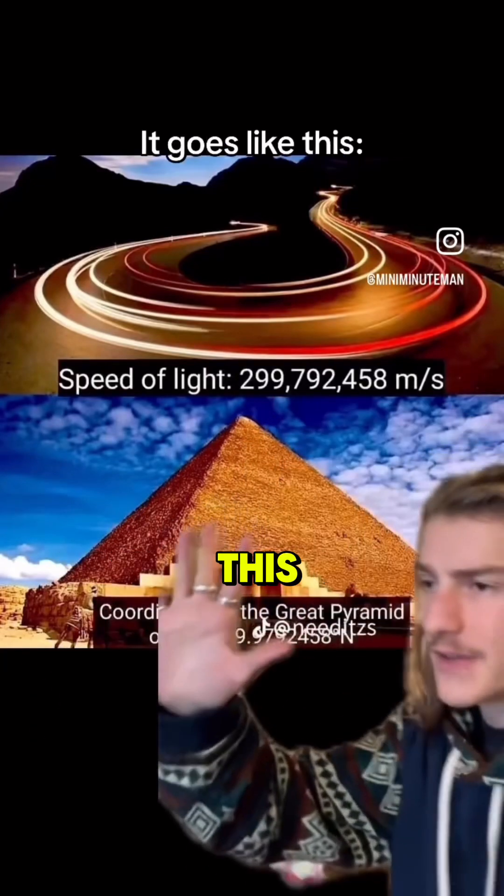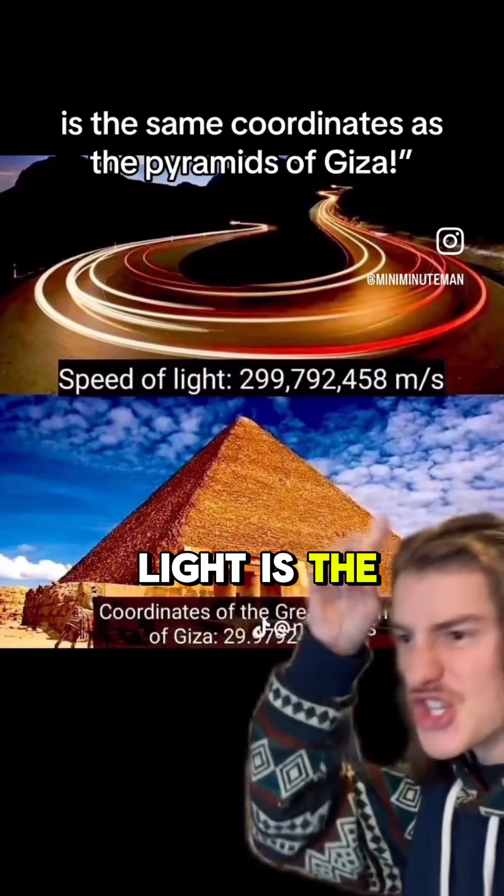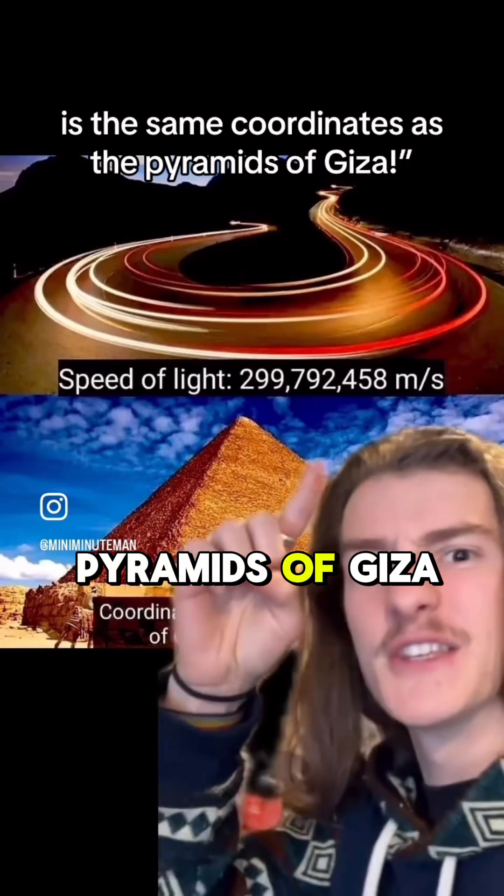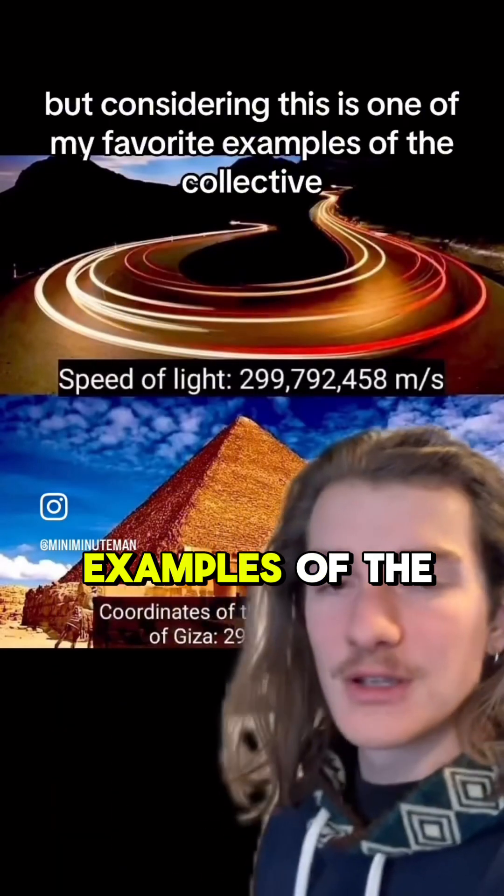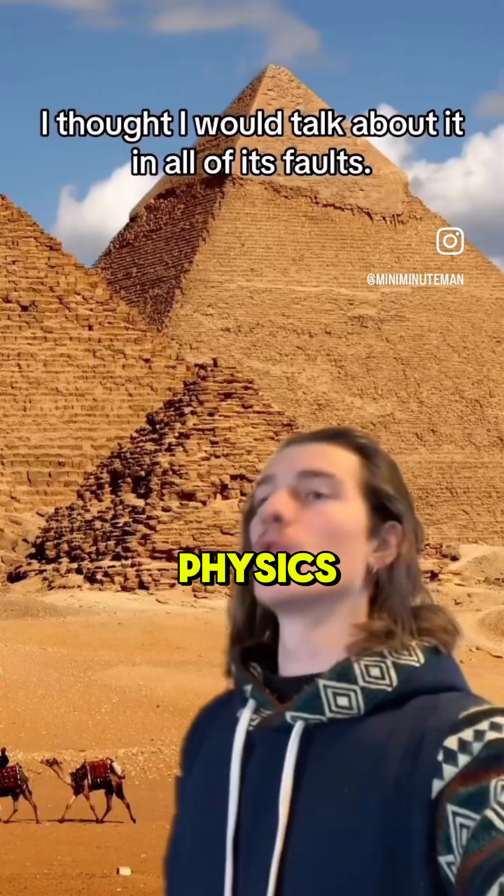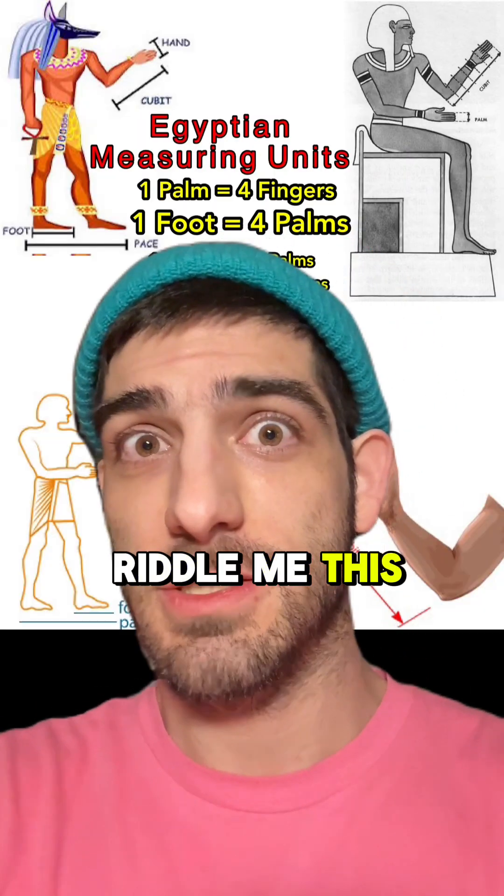You guys are not going to believe this. It goes like this. The number for the speed of light is the same coordinates as the pyramids of Giza. Considering this is one of my favorite examples of the collective aneurysm that is pseudo-archaeology, riddle me this.